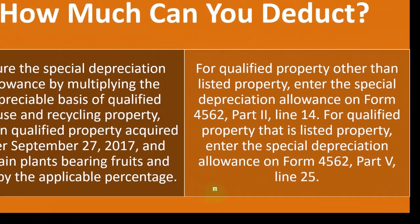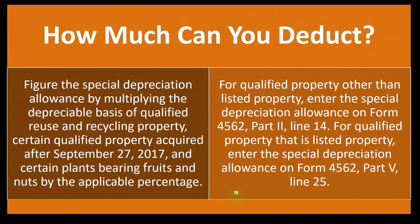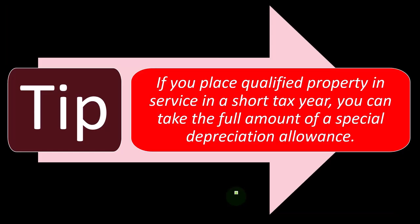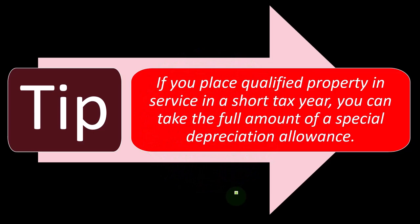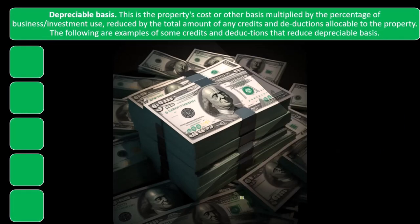For qualified property that is listed property, enter the special depreciation allowance on Form 4562, Part 5, Line 25. Tip: if you place qualified property in service in a short tax year, you can take the full amount of a special depreciation allowance.